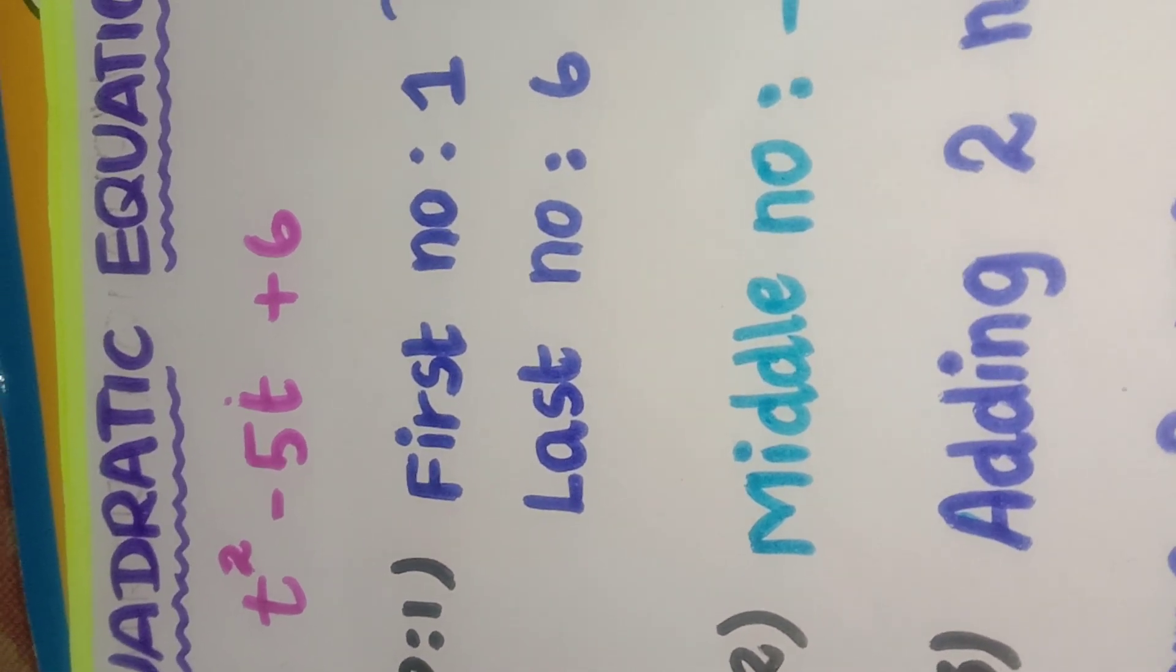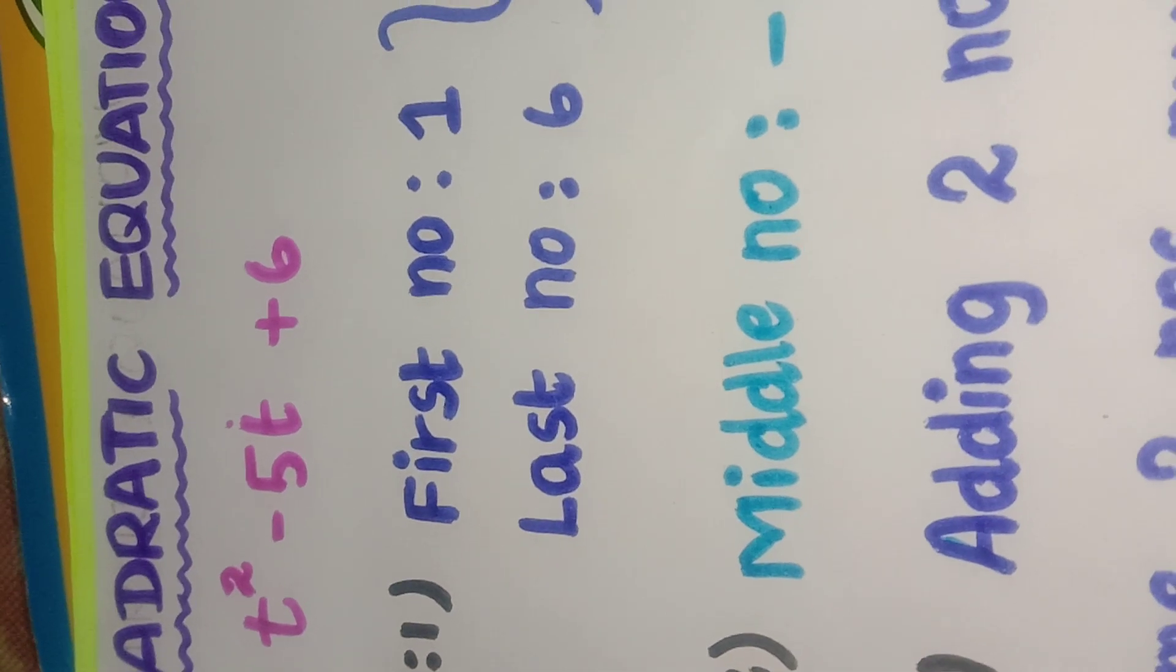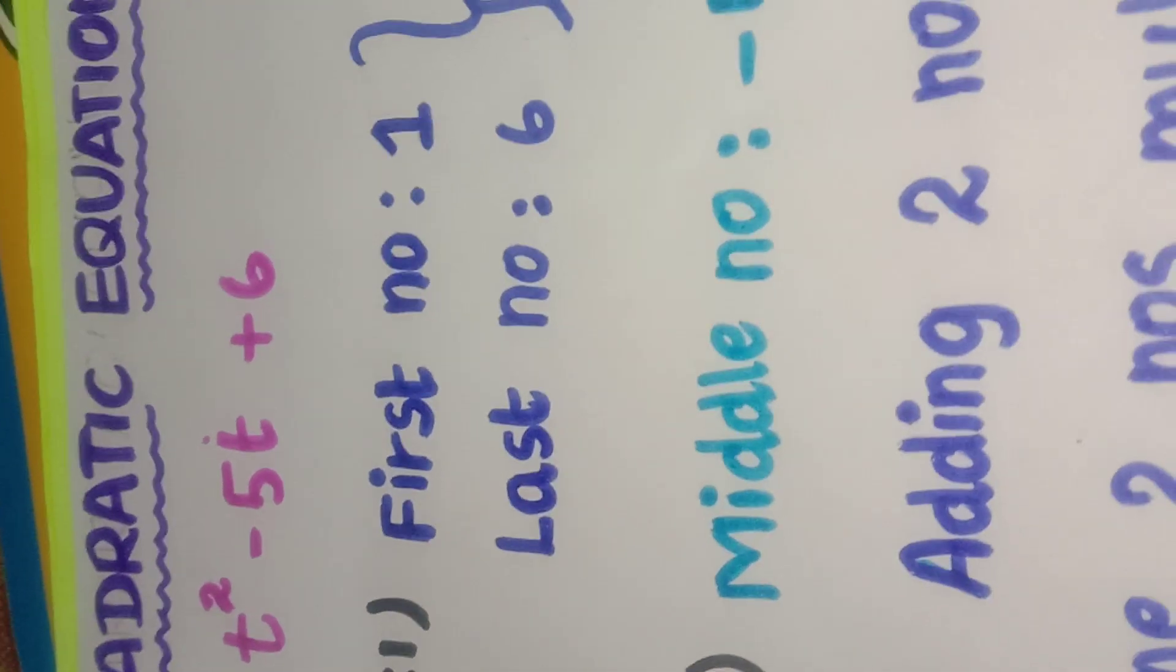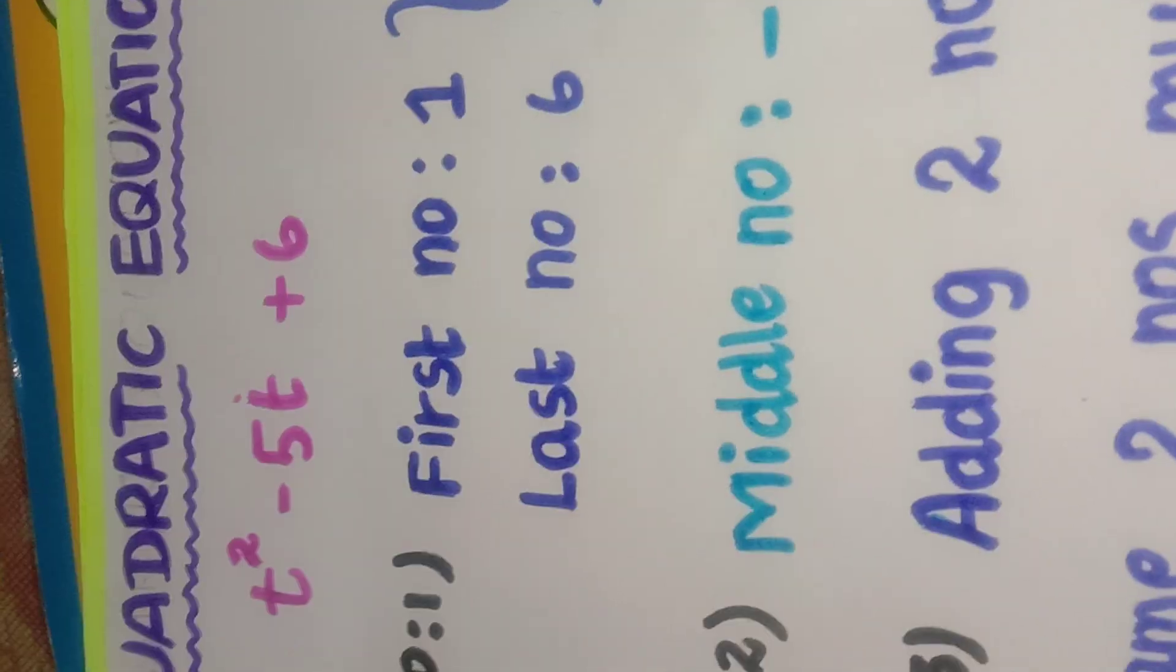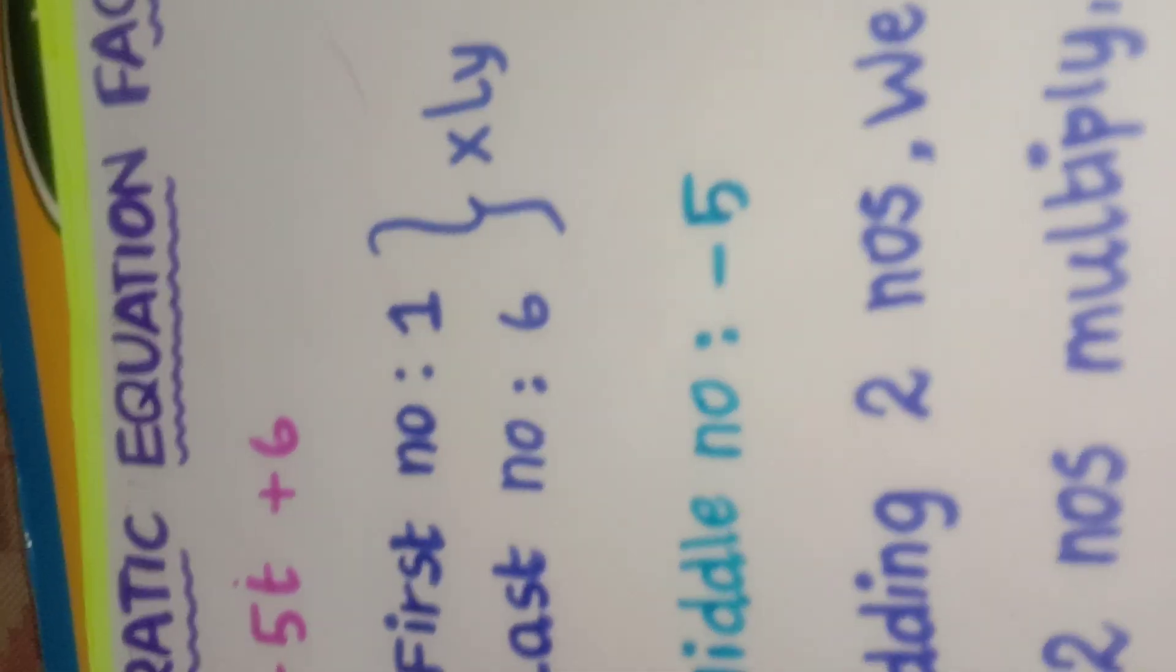Here the first coefficient of t squared is 1, then last constant number is 6. Multiply 1 into 6 equivalent to 6. Next thing is, what is the mid number? Here mid number is minus 5.